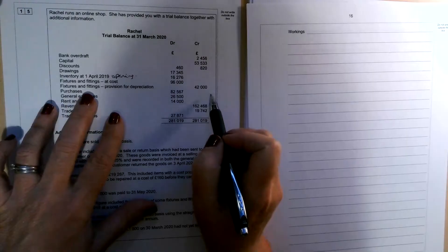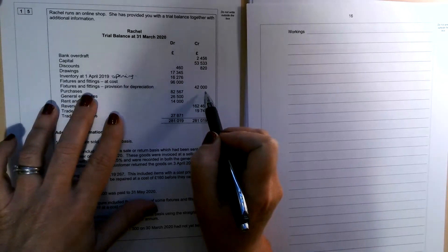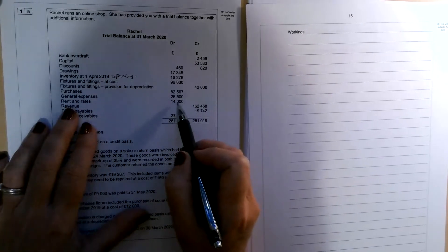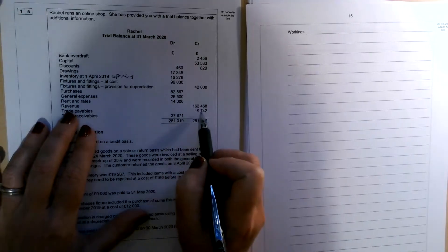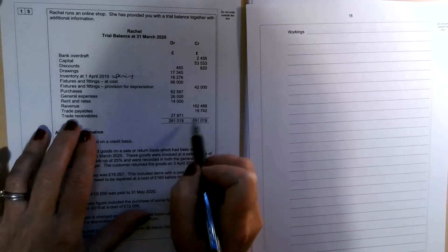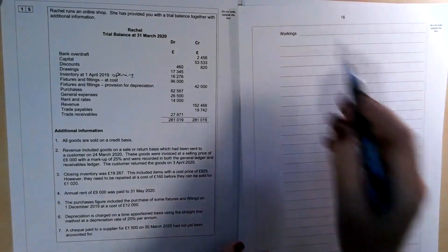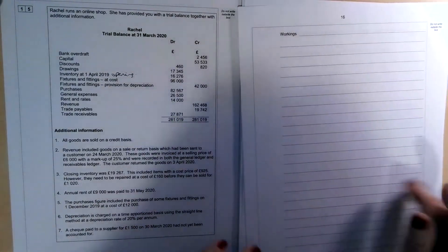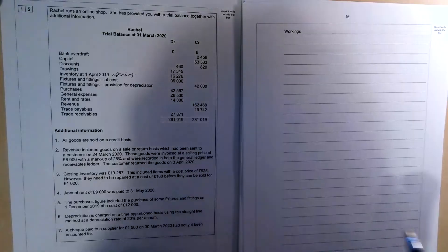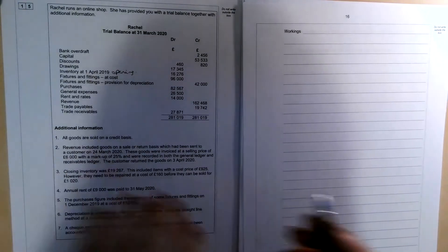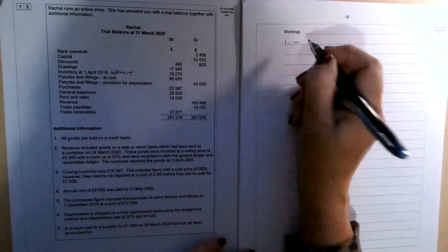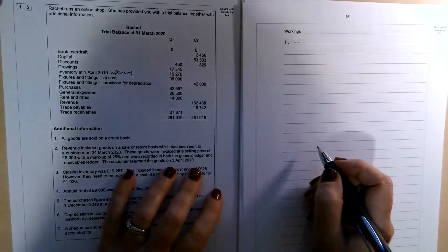So that was at the 1st of April 2019, brought forward from last year. We've got fixtures and fittings at cost and there's already a provision for depreciation brought forward. We've got purchases, general expenses, rent and rates, sales revenue, and we've got trade payables and trade receivables. So if we just work through the additional information, I'm going to do some workings before we move on to preparing the income statement. So number one, all goods are sold on a credit basis. We don't need to do anything with that piece of information.